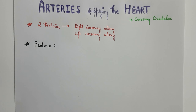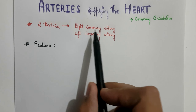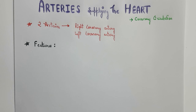Hello friends, this is Samarj and welcome to my YouTube channel, Love for Anatomy. Today we are going to discuss a very important topic: the arteries supplying the heart, also known as the coronary circulation. The heart works very hard to supply blood to every part of the human body, but the cardiac musculature itself needs blood supply. The heart is supplied by two coronary arteries arising from the ascending aorta: the right coronary artery and the left coronary artery.